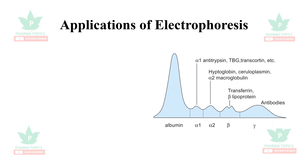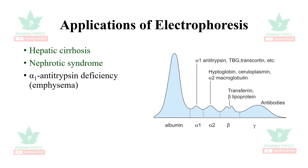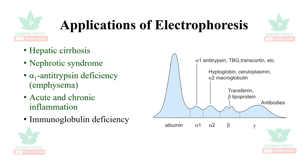Different components, when eluted, give differential peaks. Based on these peaks, the actual test components can be compared with reference compounds. Electrophoresis is useful in detecting hepatic cirrhosis, nephrotic syndrome, alpha-1 antitrypsin deficiency which occurs in emphysema, acute and chronic inflammatory conditions, immunoglobulin deficiency, and multiple myeloma — all detectable based on electrophoretic mobilities.